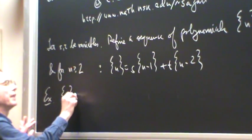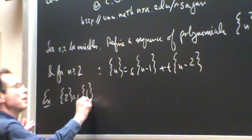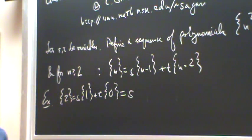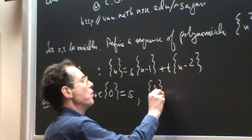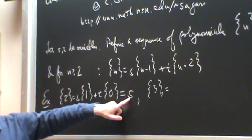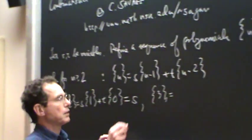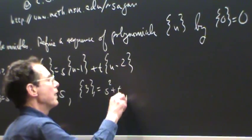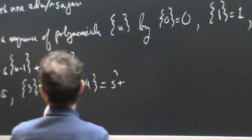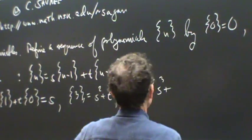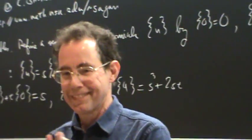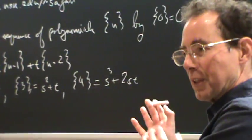So what's {2}? Well, {2} would be s times 1 plus t times 0. These are 1 and 0, so that would give me s. Let's see, {3} would be s times this, which is s squared, plus t times the 1, so that's s squared plus t. And then {4} would give me s times the previous, so s cubed plus st, and then another st from t times the previous. And I think we can let the computer do the rest of them. Everybody clear what this sequence is?